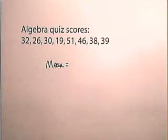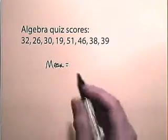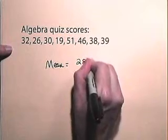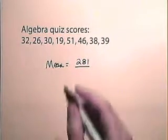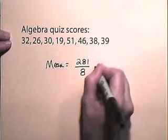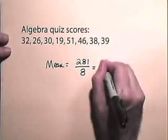For the algebra quiz scores, we are going to add up all of these values. The total is 281, and we are going to divide by the number of scores, which is 8. So the mean here is going to be 281 divided by 8, which is 35.1.